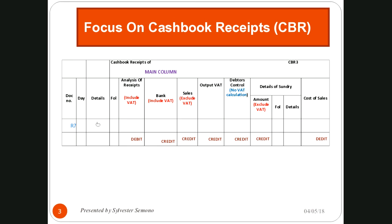Sometimes when it comes to sales, they are not very specific about the source, so you will put 'cash sales' here. For now, I'm going to skip the folio — it's not that useful at the moment, but I will dwell on it more in the future when it comes to bank reconciliation. Now let me talk about the analysis of receipts. The analysis of receipts goes hand-in-hand with the bank column — they work together. Whatever I have under the bank will be the same as the analysis of receipts.